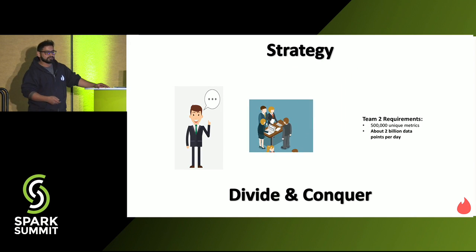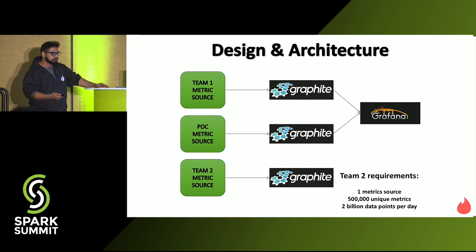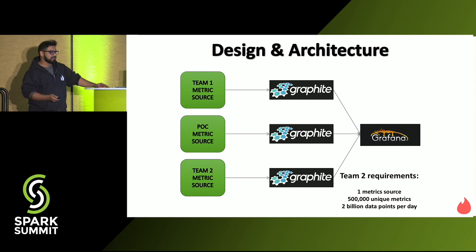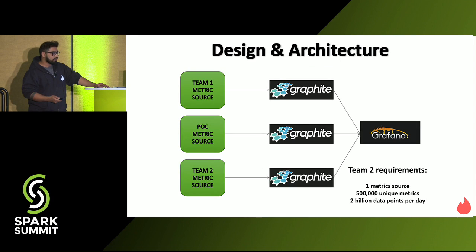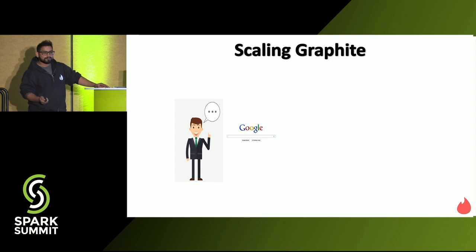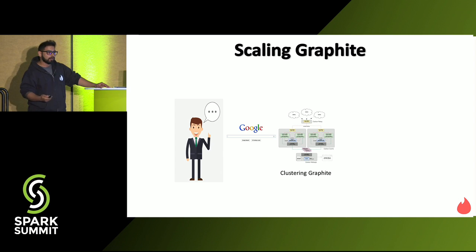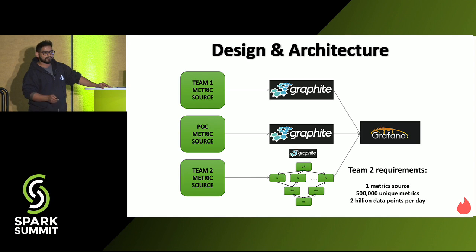Team two had more metrics and more data points. Using the same strategy — bring in another Graphite, another data source — he plugged Grafana into it. But team two was not really conquered, because the requirements were too high and Graphite failed. He went back to Google and searched for how to scale Graphite, read articles about clustering Graphite, and built a complex cluster architecture to replace the single-node Graphite. Team two conquered? Not really — maybe for a month — because scaling Graphite dynamically is hard to do.